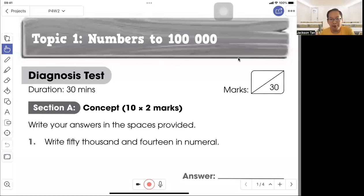Hello, I'm Mr. Tan. Today we are doing numbers to 100,000. We'll do some questions. Question 1: Write fifty thousand and fourteen in numeral. Fifty thousand is 5-0, and fourteen is 1-4, so 50014. You can see that we leave a space between the thousands and hundreds.